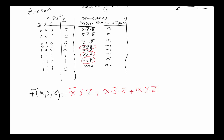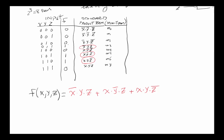This is referred to as the standard or canonical form of the function. If someone asks you to write the standard or canonical Sum of Products form, this is it. It's called Sum of Products because the products refer to the AND operations, and you are summing (OR-ing) them together. It is called standard because every variable appears in every term.